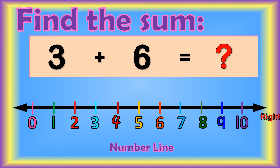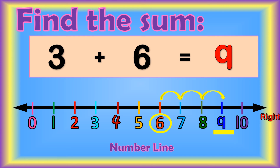Find the sum of 3 plus 6. We start from the bigger number, which is 6. Then we jump 3 numbers to the right: 1, 2, 3. We land on 9. So the sum of 3 plus 6 is 9.